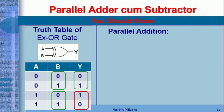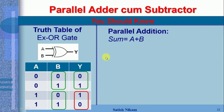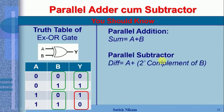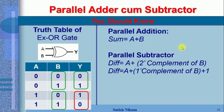In digital arithmetic, for parallel addition, the sum equals A plus B, meaning we perform addition bit by bit. For parallel subtraction, we subtract B from A by taking A as it is and adding the two's complement of B. The two's complement is calculated by adding 1 to the one's complement of the number.